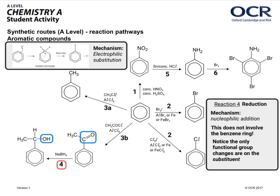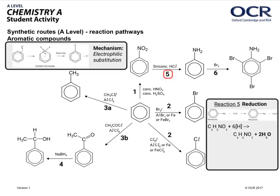Reaction number 4 is a reduction — very important to be aware that it's not involving the benzene ring. The benzene ring remains intact at all times; it's the substituent that's undergoing change, highlighted by the blue squares. It goes from a ketone to a secondary alcohol — the benzene ring plays no part. It would be easy to fall into the trap of treating this as an electrophilic substitution, but it is not. Reaction 5 is also a reduction. It's really important to remember the six H's in square brackets and particularly the two H₂O's — the water at the end is often forgotten. Then add sodium hydroxide solution to remove excess HCl and make phenylamine from any phenylammonium chloride salt that may have formed.